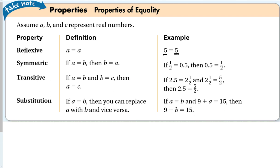Transitive property says that if a is equal to b and b is equal to c, then a is equal to c. The example is pretty good there. So 2.5 is the same thing as 2 and a half, and 2 and a half is the same thing as 5 over 2. That means that 2.5 is equal to 5 over 2. The way substitution works is if a is equal to b, then you can replace a with b. So if a equals b, 9 plus a is equal to 15. Then also 9 plus b is equal to 15. As long as these two are equal, you can substitute one for the other.